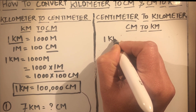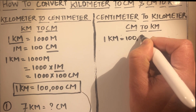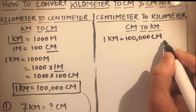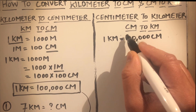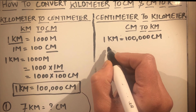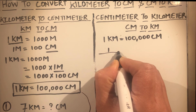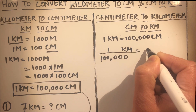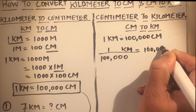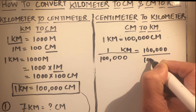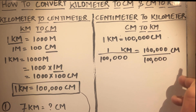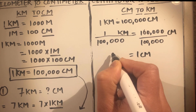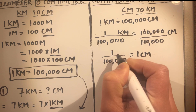Now we move to the conversion from centimeters to kilometers. We know one kilometer equals one hundred thousand centimeters. To find one centimeter, we divide both sides by one hundred thousand. The one hundred thousand on the right cancels, leaving us with one centimeter equals one over one hundred thousand kilometers.